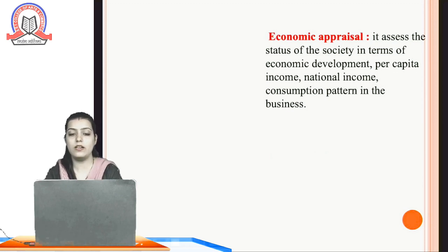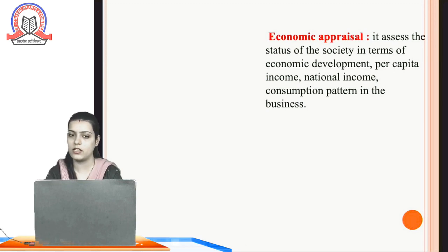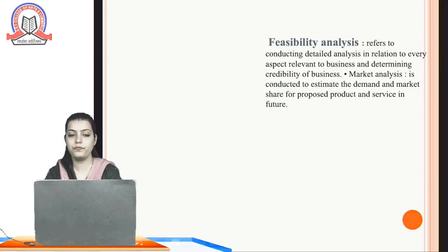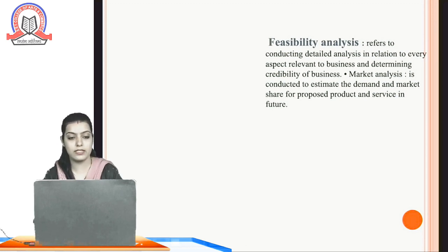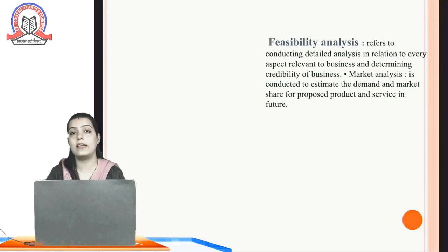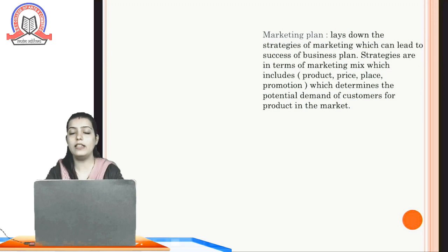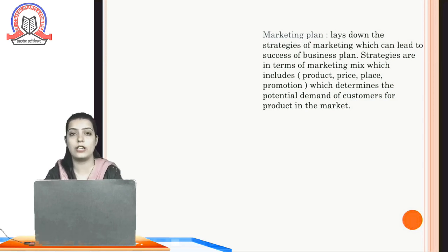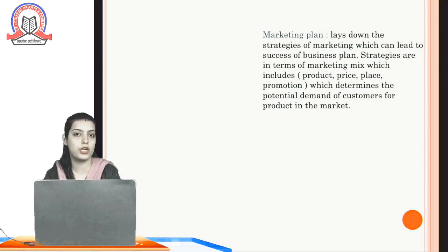The third element is economic appraisal, which assesses the status of society in terms of economic development, per capita income, national income, and consumption patterns. Economics is very important for developing per capita income and national income for India. The third process is feasibility analysis — conducting a detailed analysis to assess every aspect relevant to the business and determining its creditability. Market analysis estimates the demand and market share for the proposed product or service. The marketing plan lays down the strategy for marketing success, covering product, price, place, and promotion.